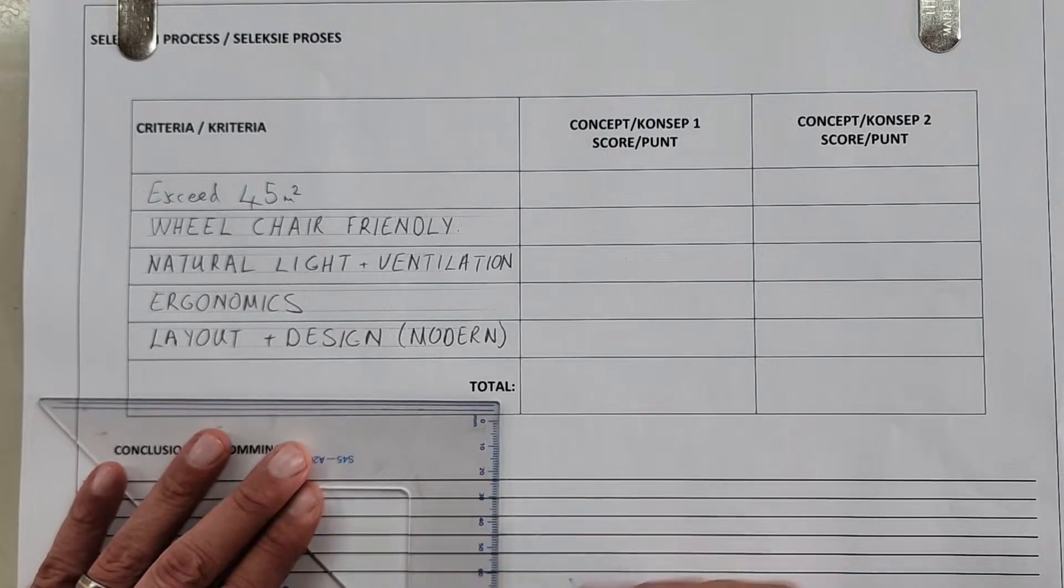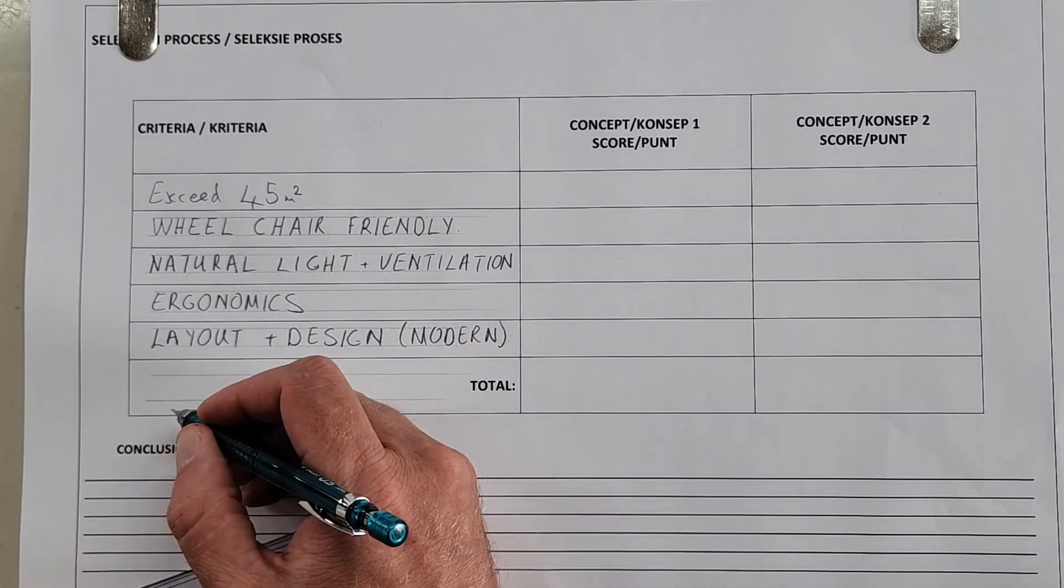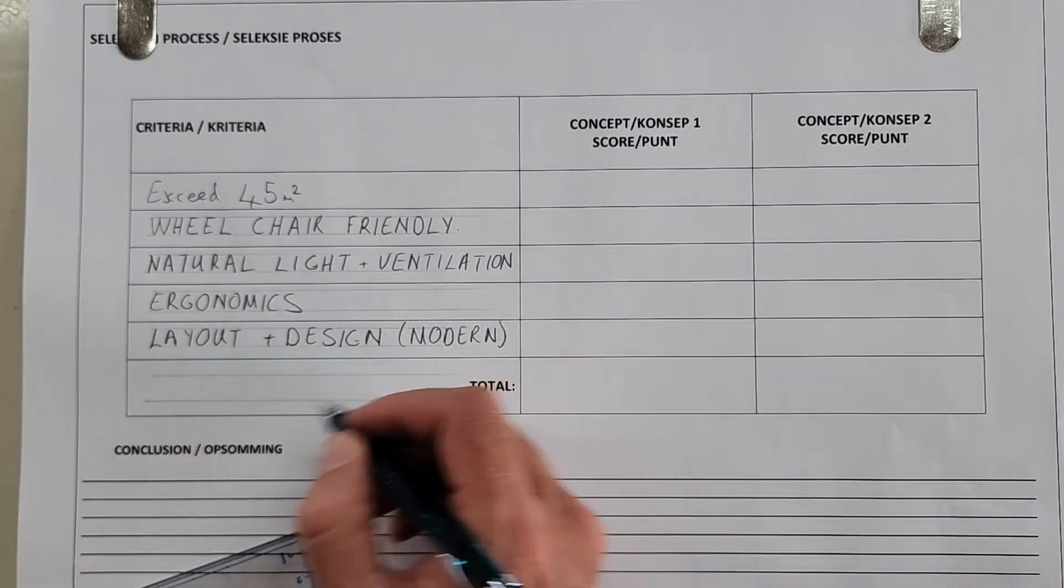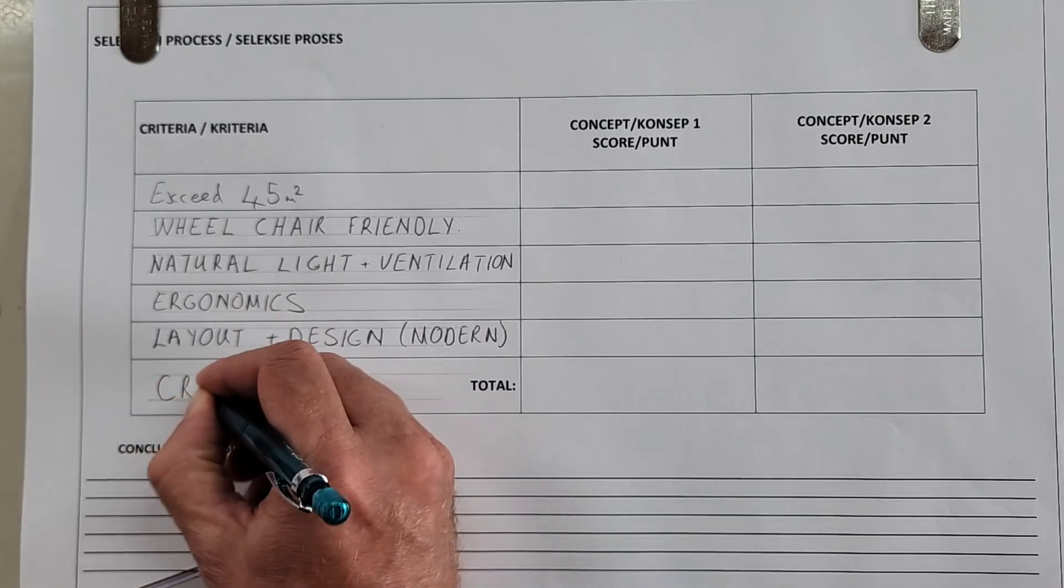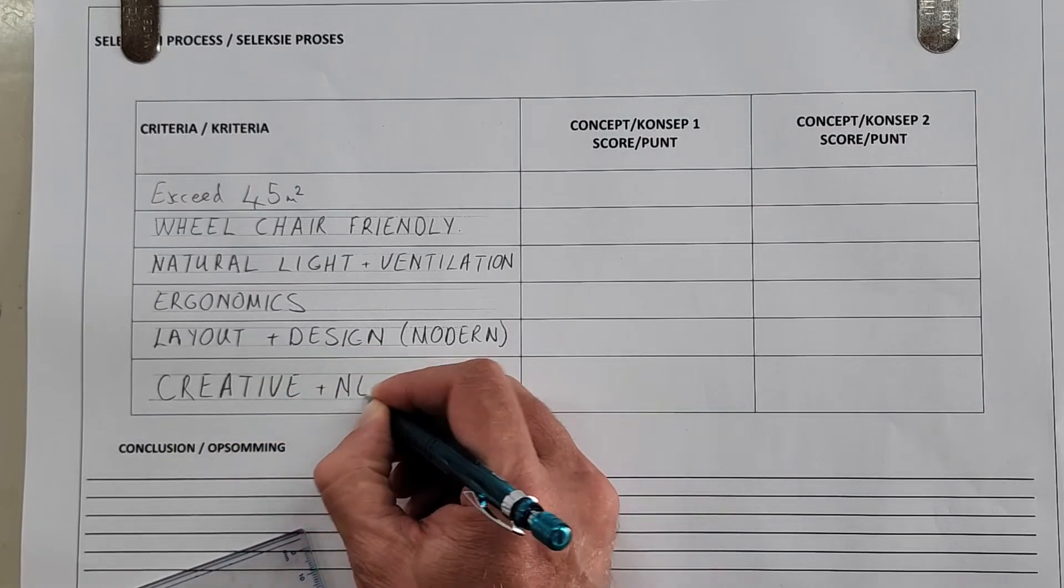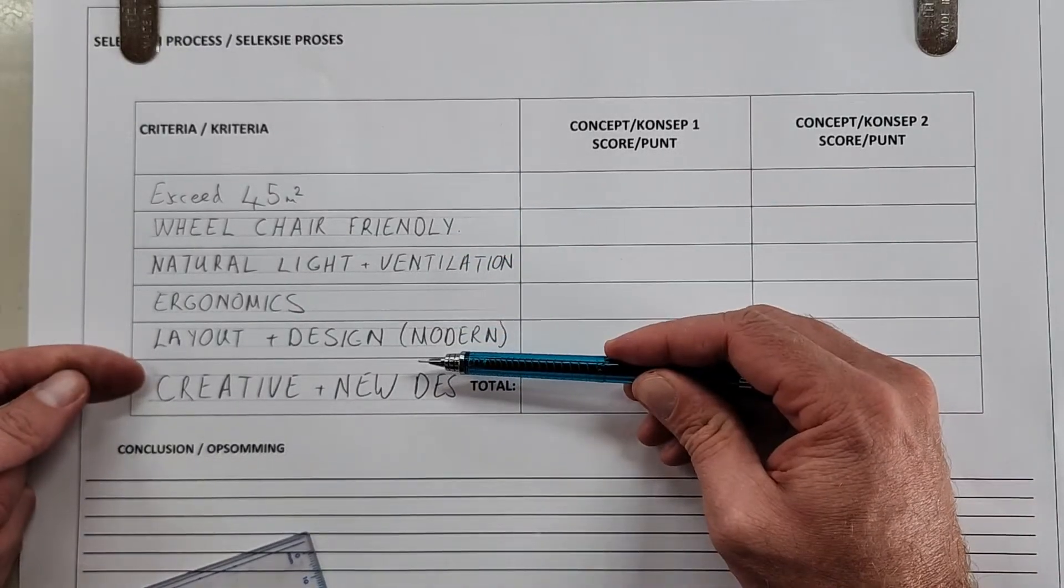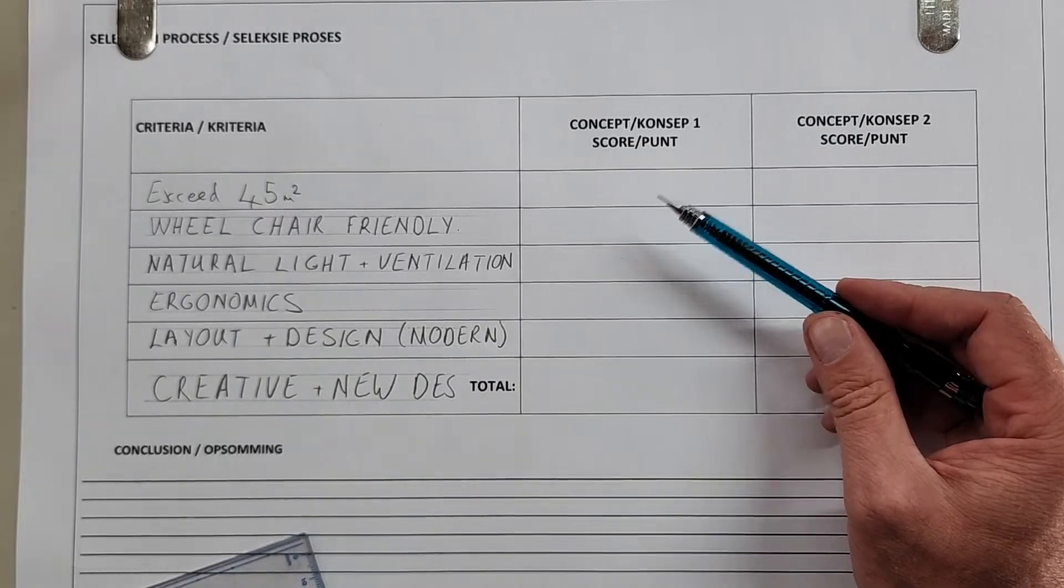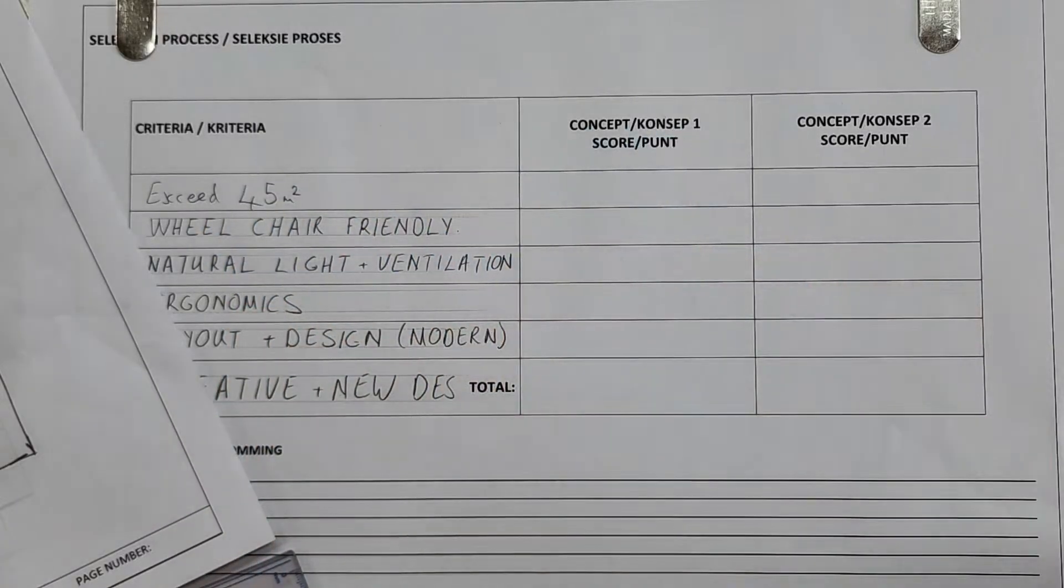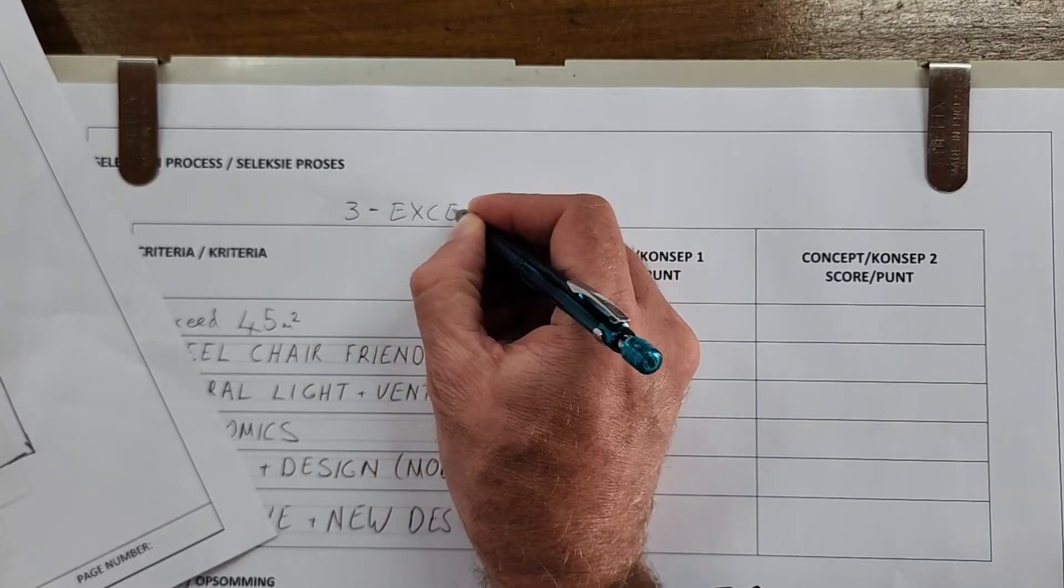Another one would be the overall layout and design. What did we want there? We wanted it to be modern. Then we put in creativity - is it creative? Because that was, I really wanted you to come up with a creative and new design, not something that we've seen before.